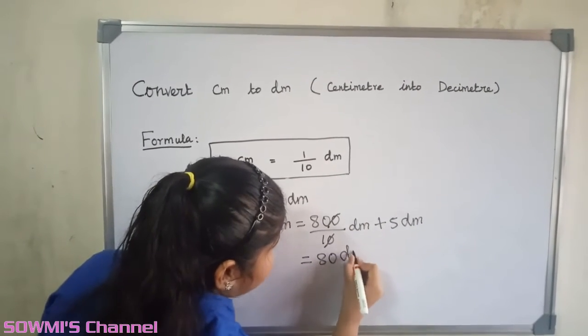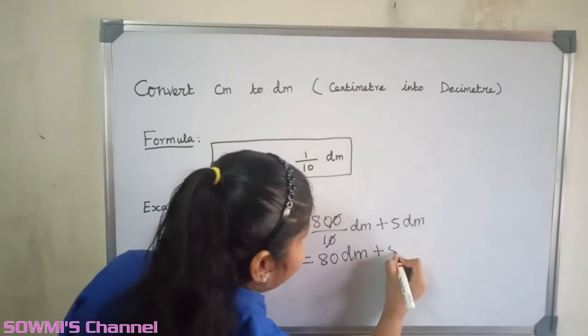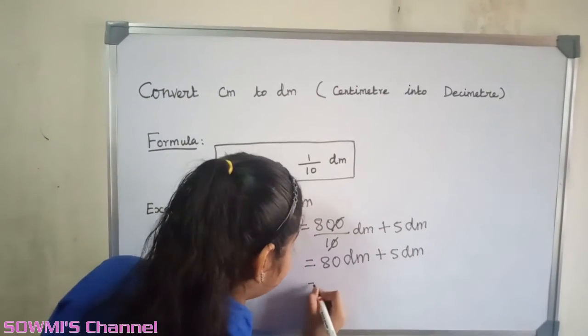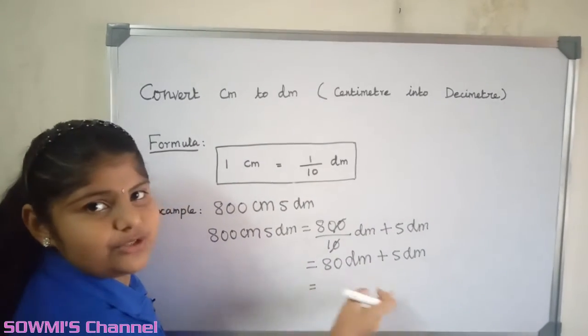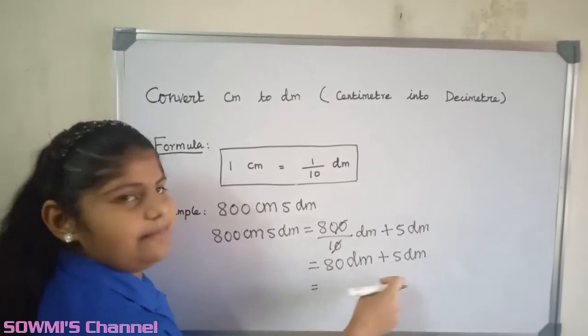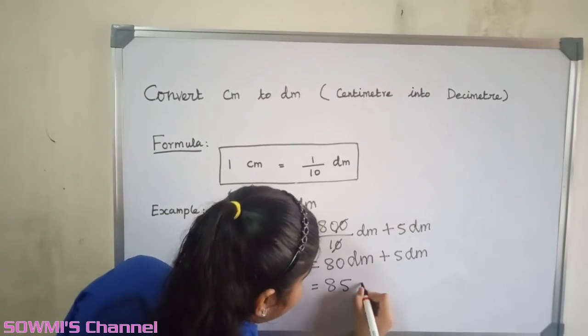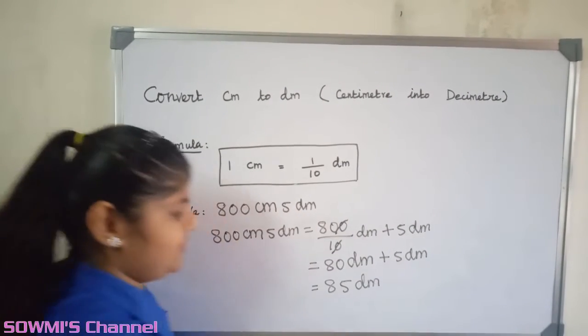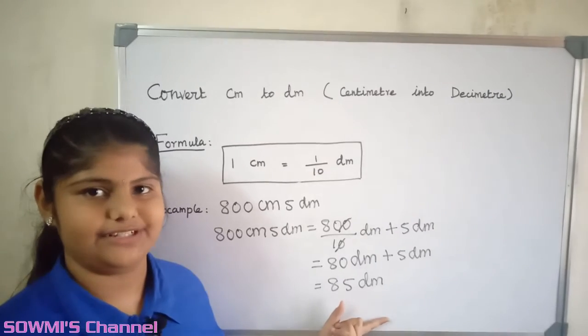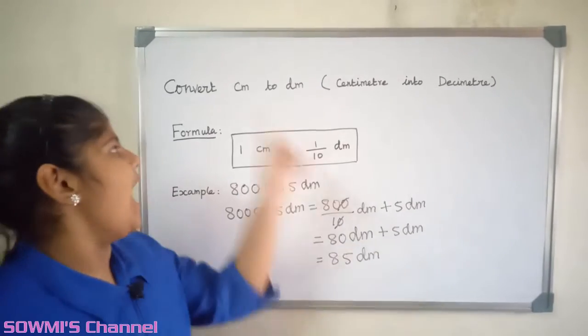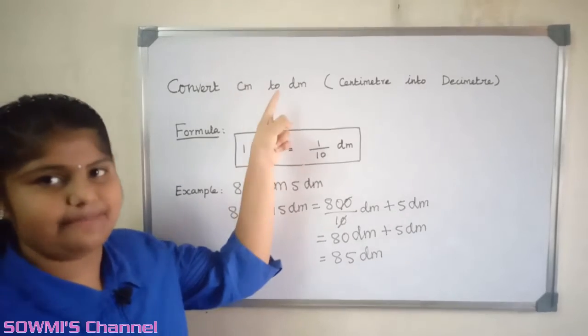80 decimeters plus 5 decimeters. Now we have to add these two numbers. 80 decimeters plus 5 decimeters is equal to 85 decimeters. So the answer is 85 decimeters. Hope you all understood how to convert centimeters to decimeters.